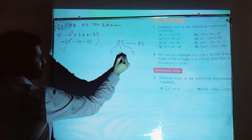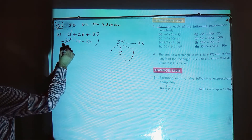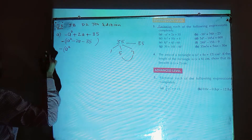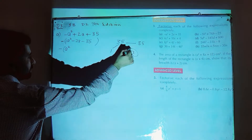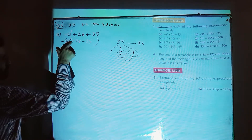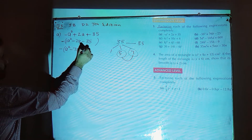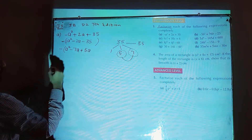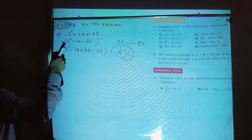I think 5 and 7 can work, because their subtraction gives 2. Since a negative sign is required, the bigger number must carry the negative: minus 7a plus 5a. Checking: minus 7 plus 5 is minus 2, which matches the middle term. That works.